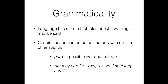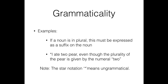There are only certain possible combinations that give meaning. 'Pat' is a possible word in English, but not 'ptua' — you interchange the sound system and you completely lose the meaning. 'Are they here?' is okay, but not 'came they here?' — and that's the grammaticality aspect of language. As a native speaker of English, you know these are not possible. Why? Because of the constraints imposed by the syntax of the grammar.